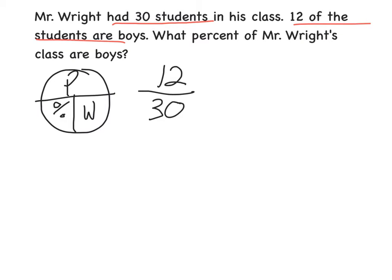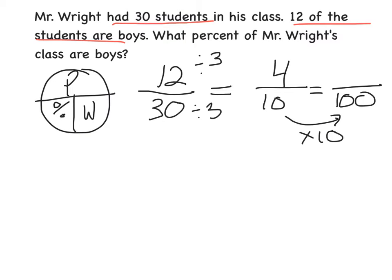There's two different ways you could solve this. We could solve this by simplifying 12 to 30. You should see that 3 goes into both of these, so that would be 4 tenths. Then you can change that to be out of 100. Multiply this by 10 and multiply this by 10, which would give me 40. So 40 out of 100 would give me 40%.